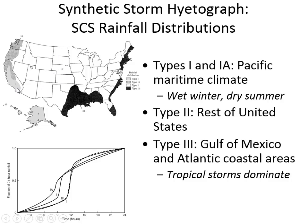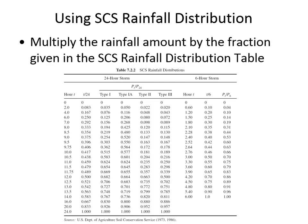There are coastal rainfall distributions that are much more steady. Our Type 2 distribution has a very steep portion around the 12-hour mark with very high intensity. In California, Oregon, and Washington, there's Type 1 and Type 1A, which don't have as steep a rainfall amount. Type 3 covers coastal areas in the Gulf, Florida, and the eastern seaboard where tropical storms dominate. The SCS rainfall distribution synthesizes a rainfall hydrograph where we may only have rainfall measurements at 24-hour intervals.